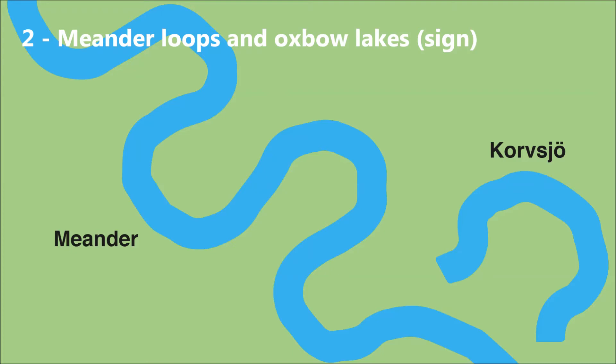Meander Loops and Oxbow Lakes. This meandering stream is commonly known as Longbibakken. Rivers and streams snake their way through flat terrain. When the bends are sharper than a semicircle, you say that the watercourse meanders.